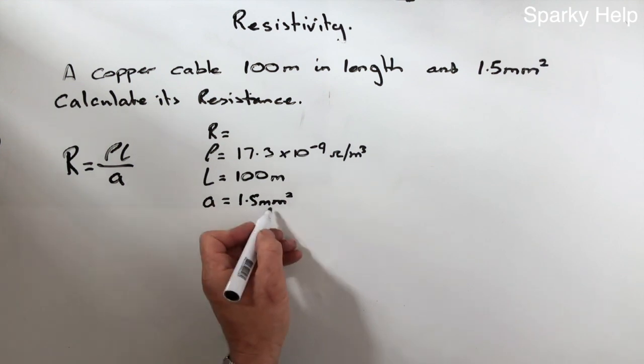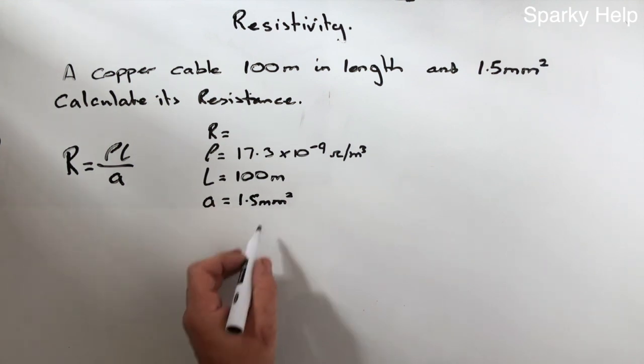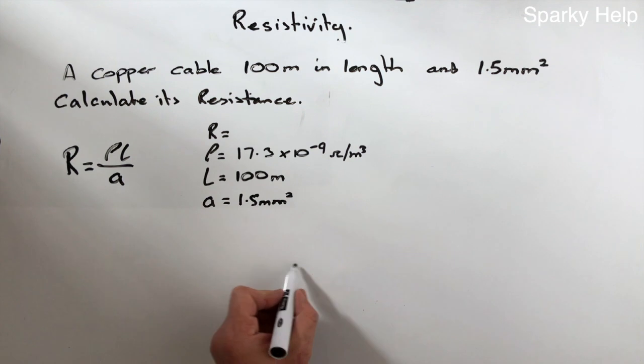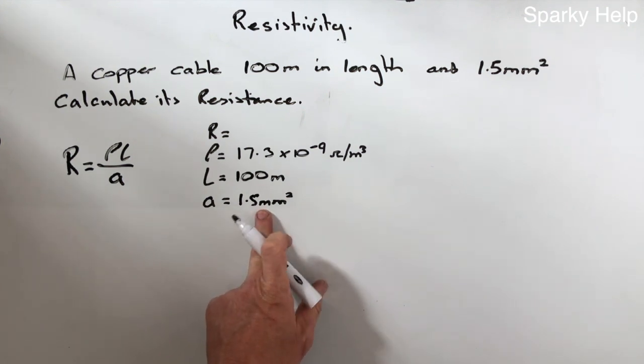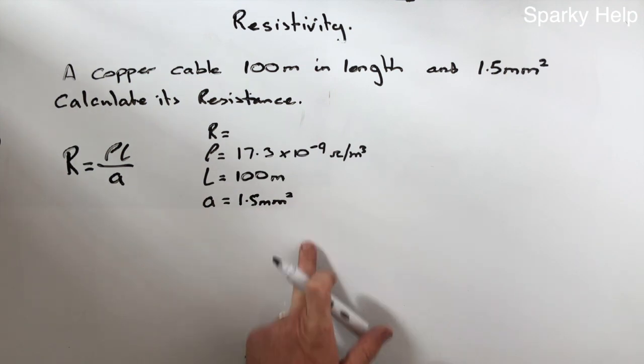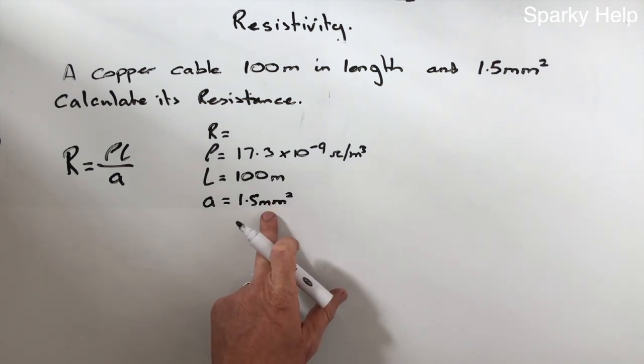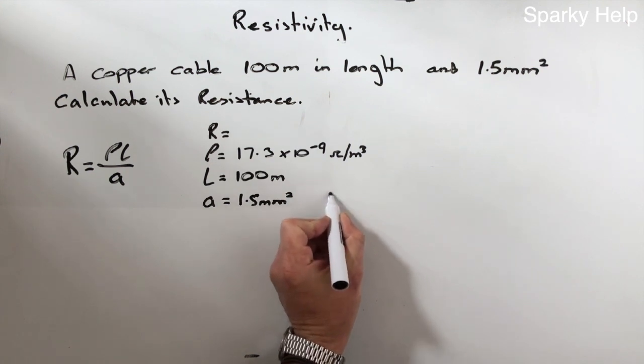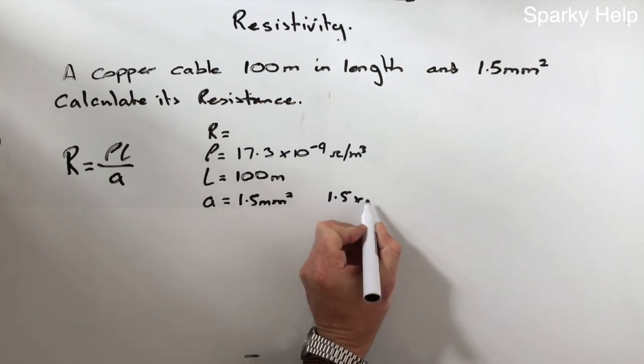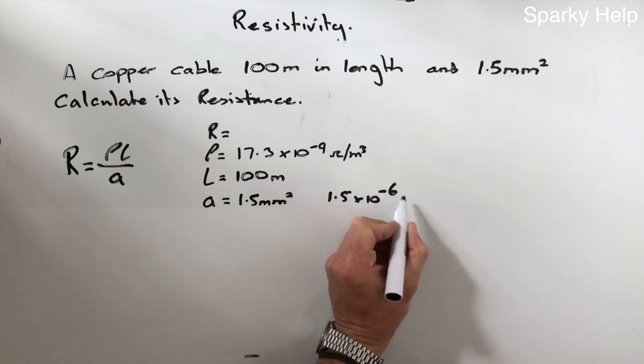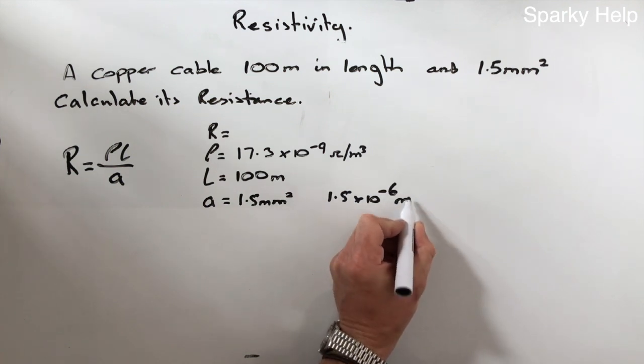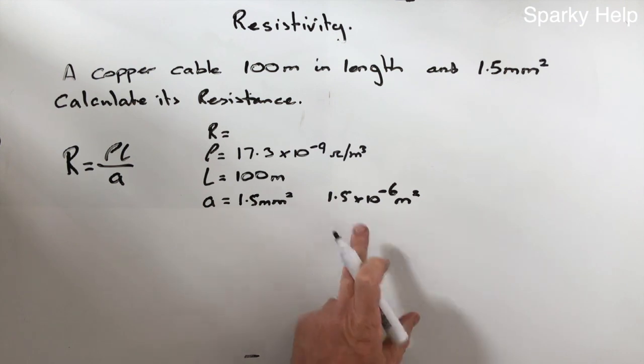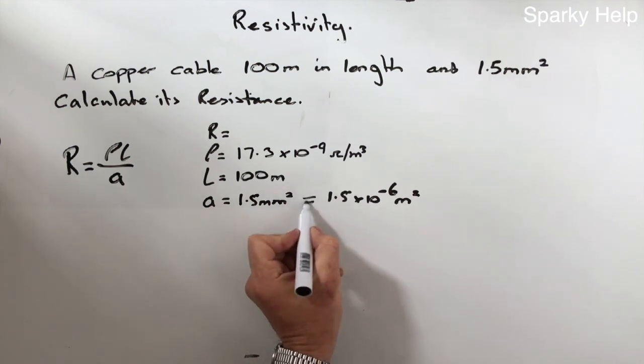Now the way to remember this, we need to get it to meters squared. So this is already in millimeters. Now remember there are a thousand millimeters in a meter. So a thousand times a thousand, which is a square of it, is a million. So a million is to the minus six is what we're going to do to this. So all we need to do to convert it is put 1.5 times 10 to the minus 6. And that is now in meters squared.